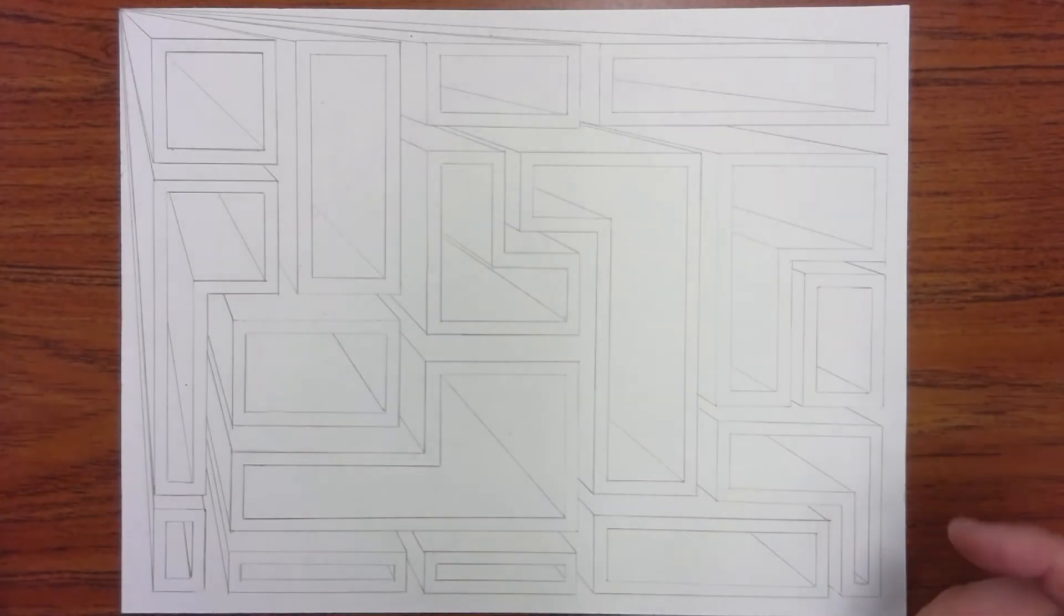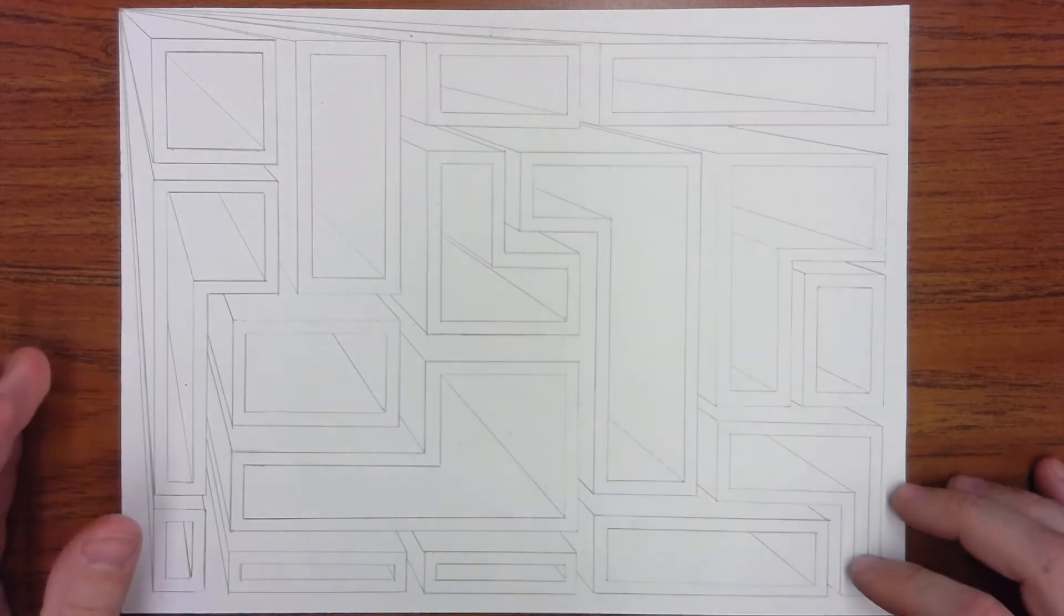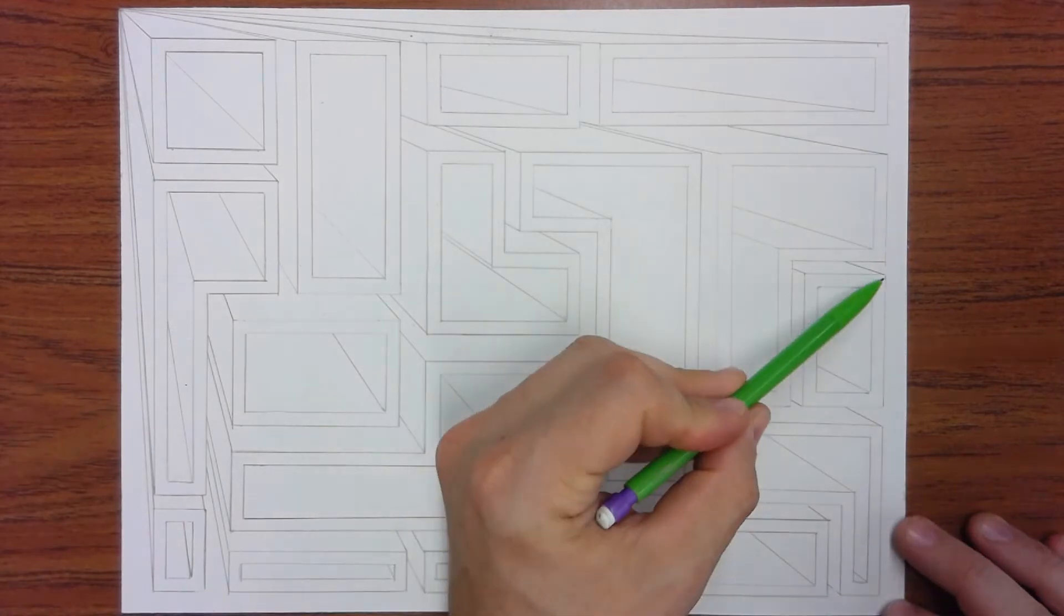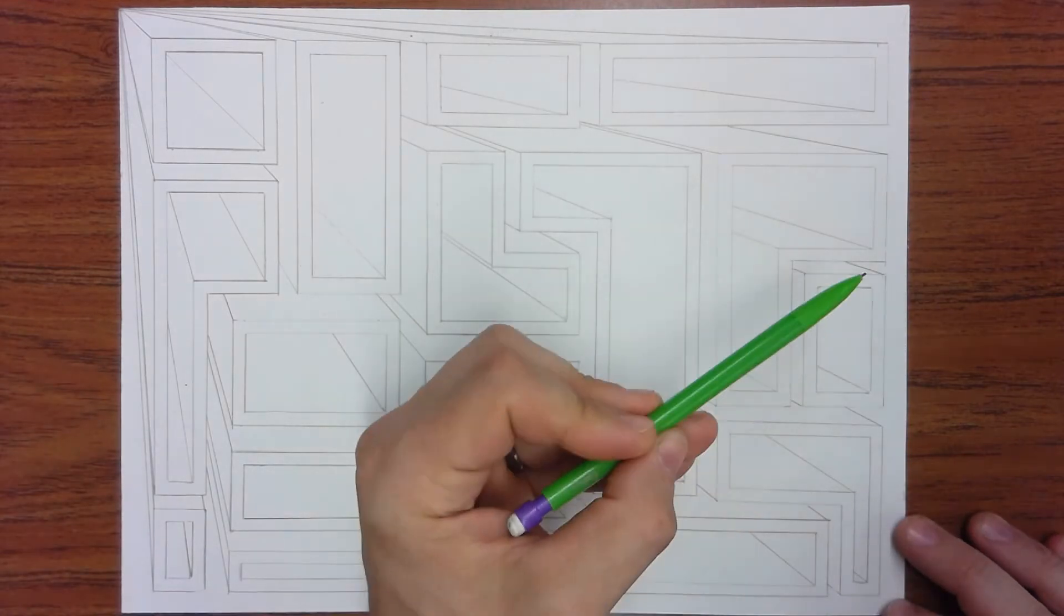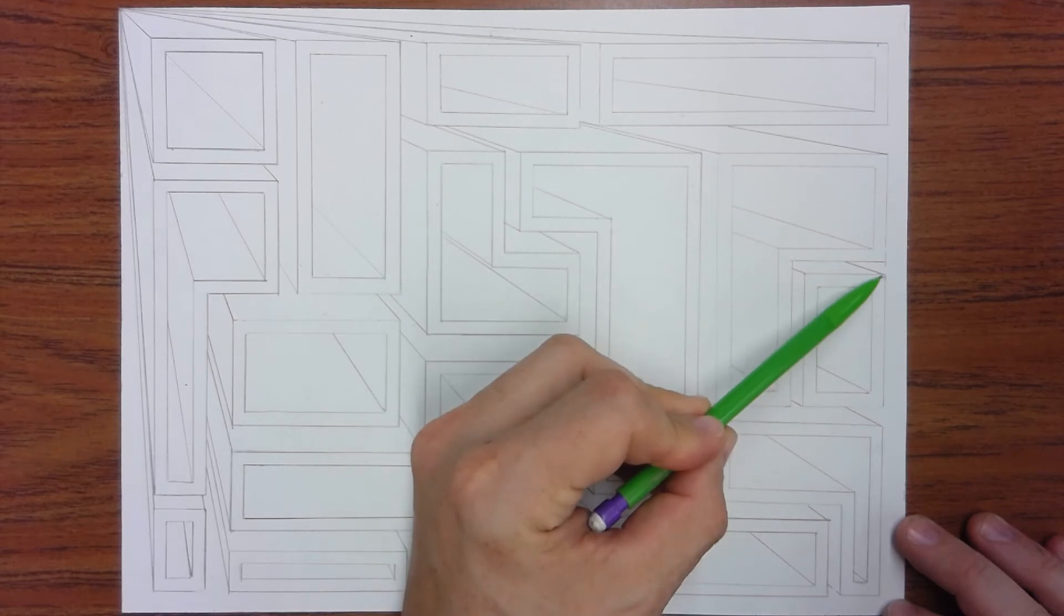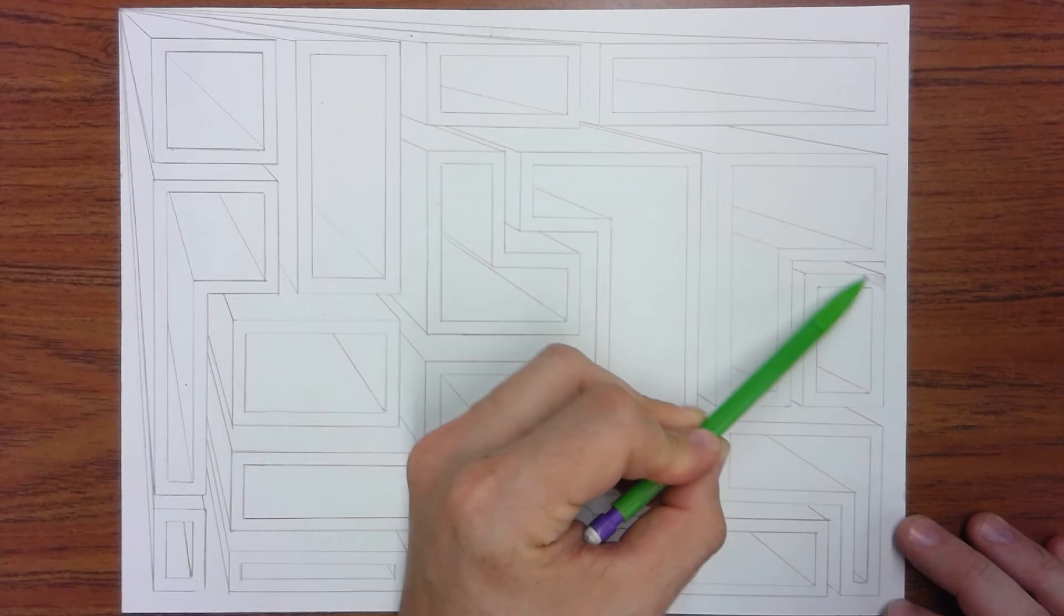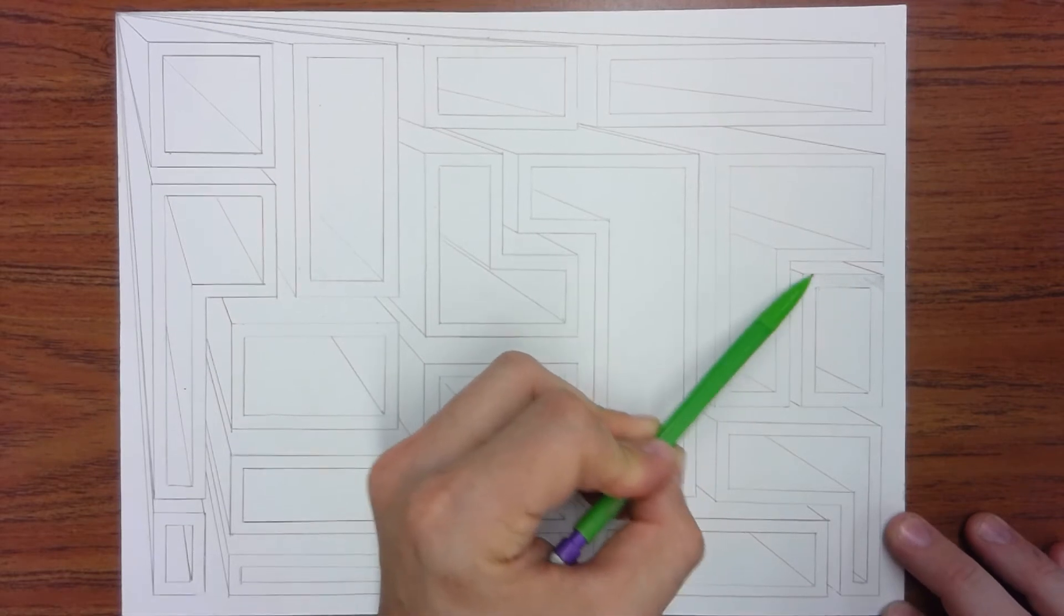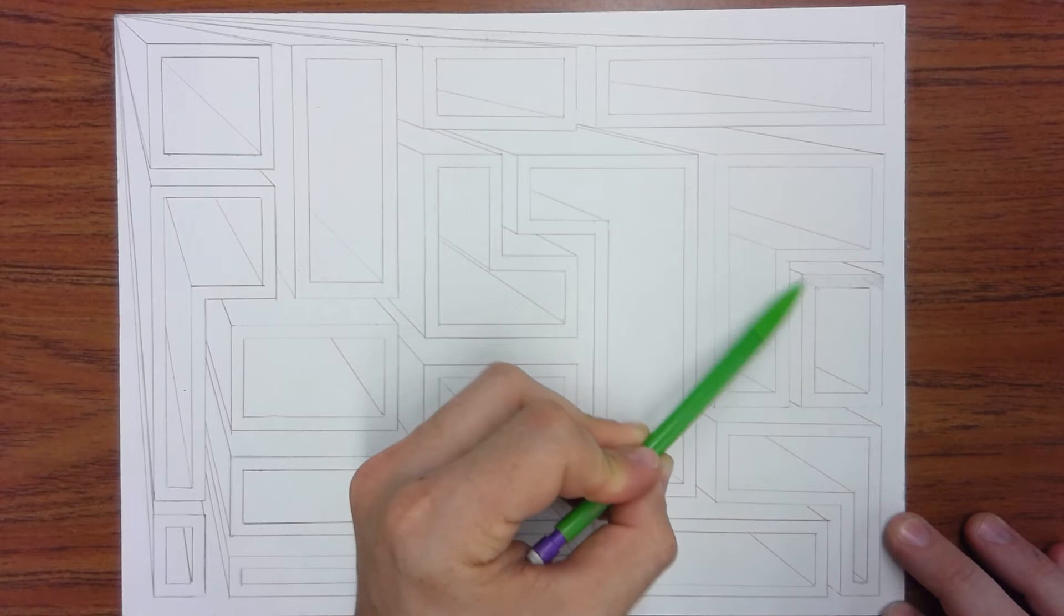Okay, so now we're going to add shading to make these boxes look like they're real. So the first thing we want to do is make the lightest gray possible on the outside edge. Notice I'm holding my pencil way back here. I'm going to go very light, try and make it as even as I can, all the way around the outer edge.